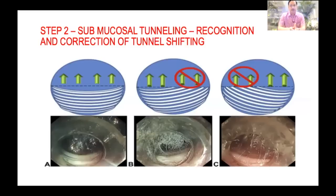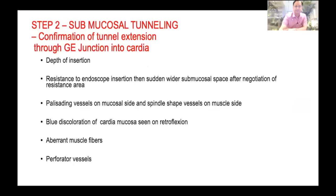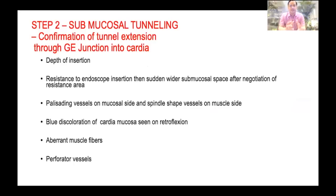Lateral dissection is much more important than central dissection — you should have adequate lateral dissection on both right and left sides. You can see tunnel more dissection on the right side, and here more on the left side; recognize this early and correct it. To identify that you have reached the GE junction: you can know by the depth of insertion, and by resistance while negotiating the scope into the tunnel because the lower esophageal sphincter is spastic in achalasia cardia. You start getting palisade vessels on the mucosal side and spindle-shaped vessels on the muscle side. You can also retroflect into the stomach and see the discoloration of the cardia, aberrant muscle fibers, and sometimes perforating vessels.